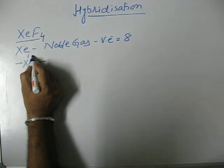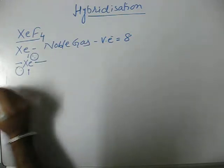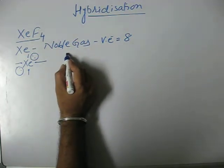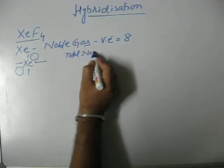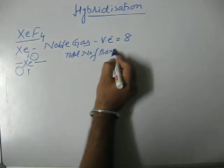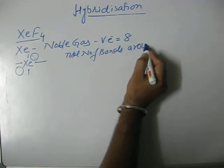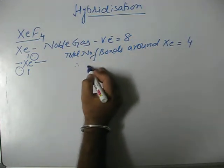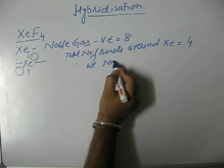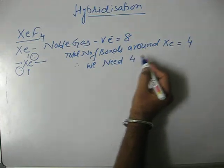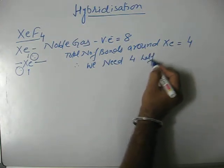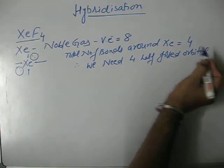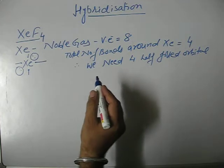Therefore, there will be 2 pairs of electrons around it. As a result, if we count total number of bonds around xenon, it is equal to 4. Therefore, we need 4 half-filled orbitals in xenon in order to form 4 covalent bonds.